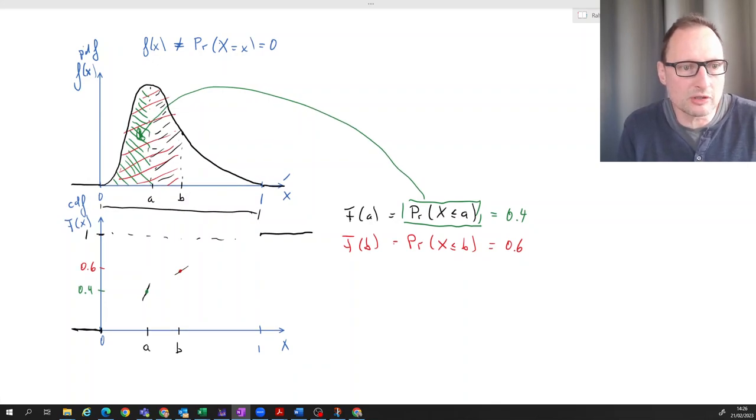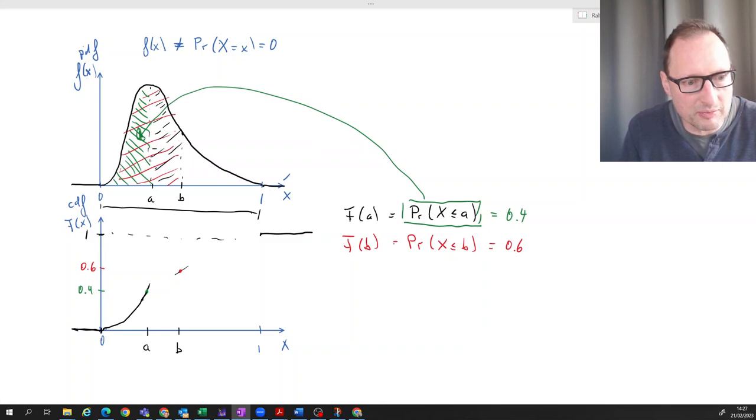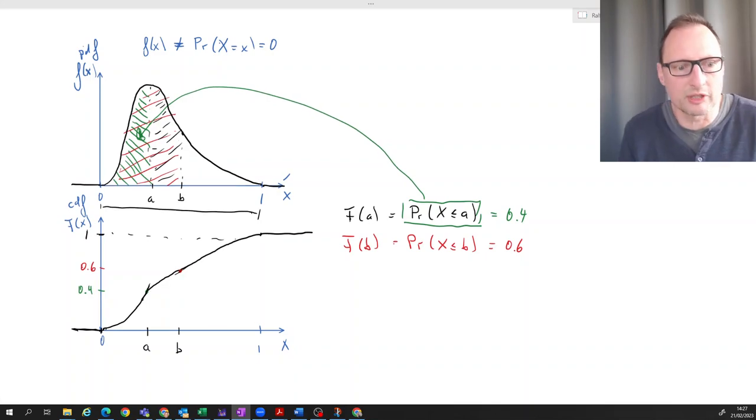Higher values of the PDF mean higher slope of the CDF. So how does that CDF look like approximately? We're starting fairly slow, but then the slope will increase until we have maximum slope here. And then it will get slower and lower until we hit one. So this is how that CDF approximately will look like.